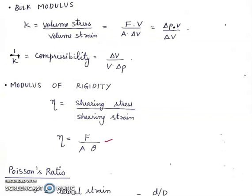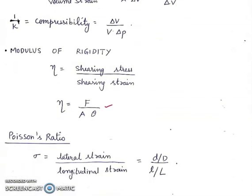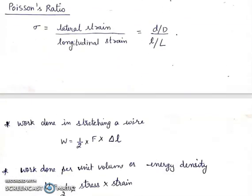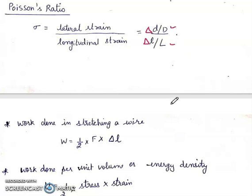Next is Poisson's ratio, sigma. Sigma is equal to lateral strain upon longitudinal strain, which is delta D by D upon delta L by L, where D is the diameter and L is the length.